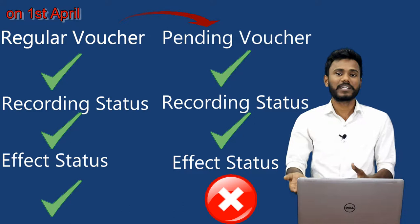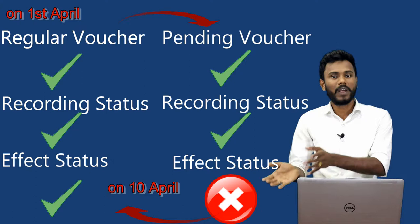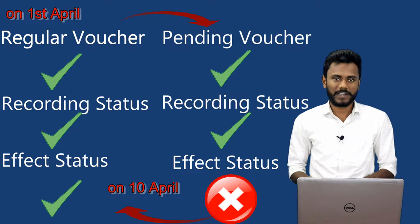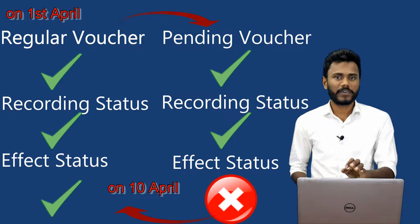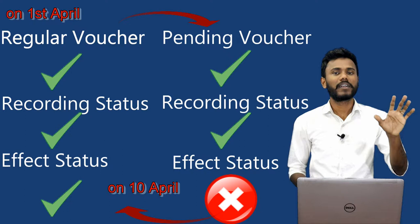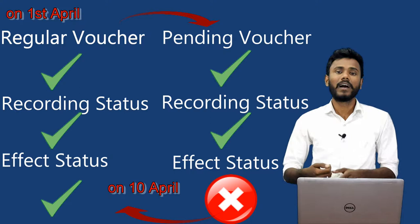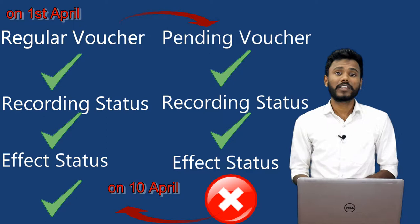Once you convert to a pending voucher, the voucher will be recorded but your book of accounts will not be affected with those values. When the check is cleared in the bank, you convert from pending voucher to regular voucher in order to get the effect of those values. In summary: record on date of receipt, convert to pending so there's no effect on book of accounts, and when cleared by the banker on the date of clearance, convert pending voucher back to regular voucher.